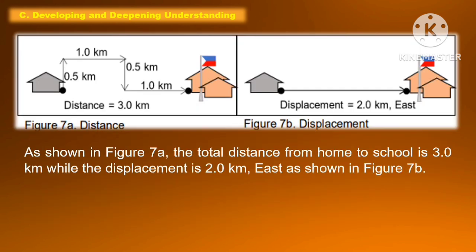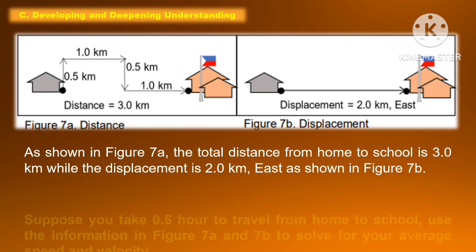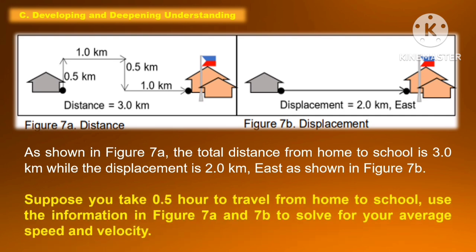As shown in figure 7a, the total distance from home to school is 3 km, while the displacement is 2 km east as shown in figure 7b. Suppose you take 0.5 hour to travel from home to school. Use the information in 7a and 7b to solve for the average speed and velocity.